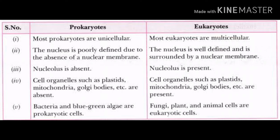Looking at the comparison table, most prokaryotes are unicellular while most eukaryotes are multicellular. In prokaryotes, the nucleus is poorly defined due to the absence of a nuclear membrane, while in eukaryotes the nucleus is well-defined and surrounded by a nuclear membrane. In prokaryotes, cell organelles such as plastids, mitochondria, and Golgi apparatus are absent, while in eukaryotes they are present. Examples of prokaryotes include bacteria and blue-green algae, while fungi, plants, and animals are all eukaryotic.